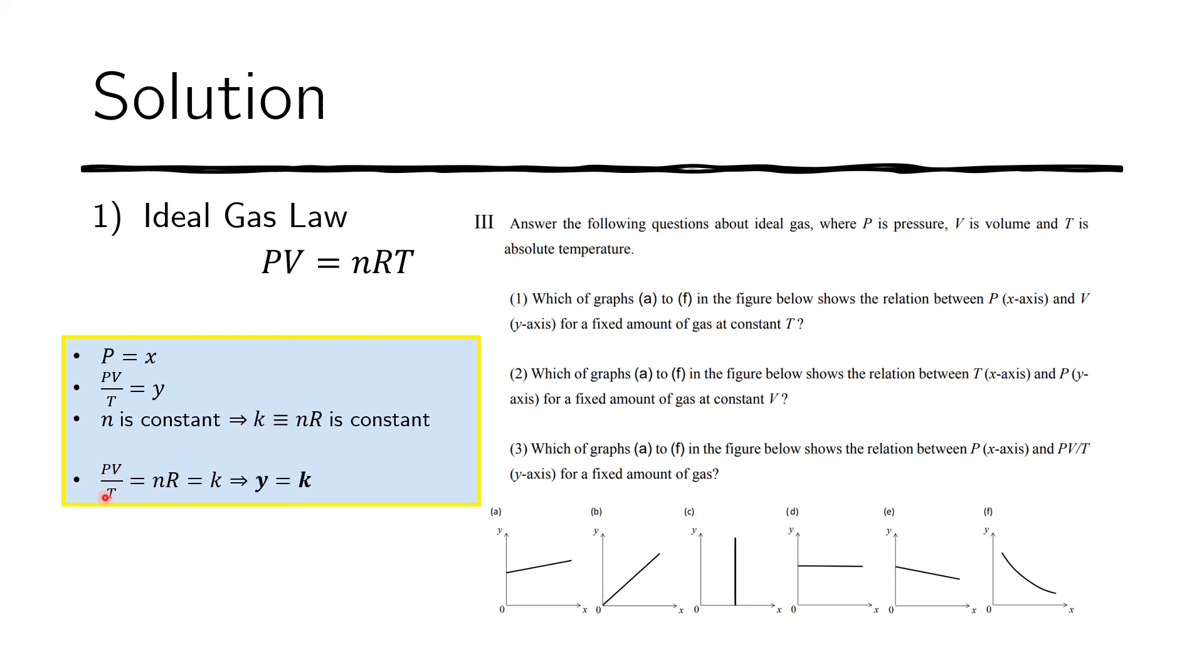Now, PV over T, which is the y here, if we divide both sides of the ideal gas law by T, we get PV over T on this side, and we get nR on this side. And we know that PV over T is y. So we replace this with y. And this bit here is a constant k.